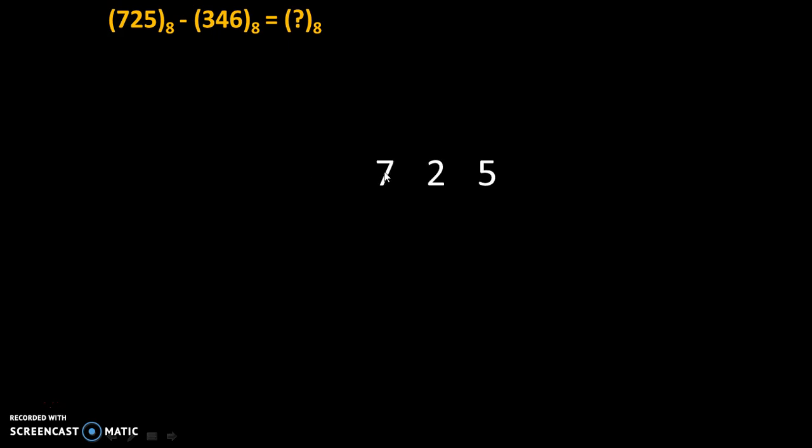So let's start with first digit 725 minus second digit is 346. Now 5 minus 6 we cannot do that because 6 is bigger than 5. That's why we will take borrow from the next digit. So this 2 will now become 1 and that borrow will be taken as 8. Please remember this, whenever we take borrow in octal number system it becomes 8.